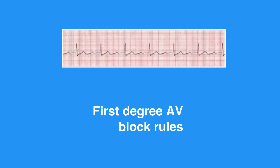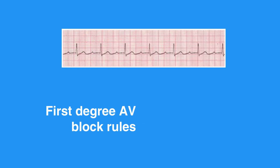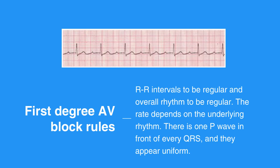First degree AV block rules include RR intervals to be regular and overall rhythm to be regular. The rate depends on the underlying rhythm. There is one P wave in front of every QRS, and they appear uniform. The PR interval measures more than 0.20 seconds in duration and is consistent.